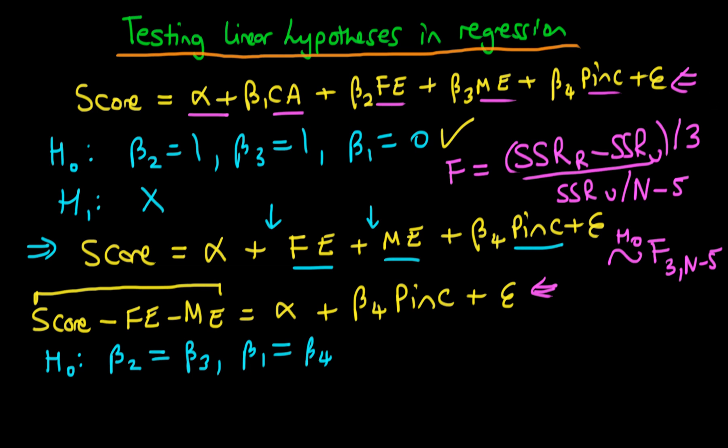So what would be the restricted model which we'd run in this case? Well we just plug these restrictions into our original model. So we have score equals alpha plus beta 1 and then we would have the combination or sum rather of class attendance and parental income, and then we would have a second term here which was just the combination of mother's education plus father's education.